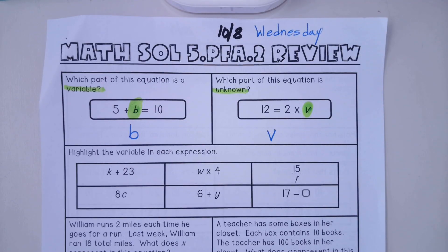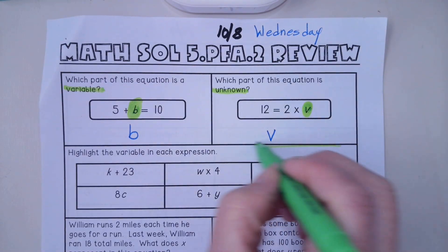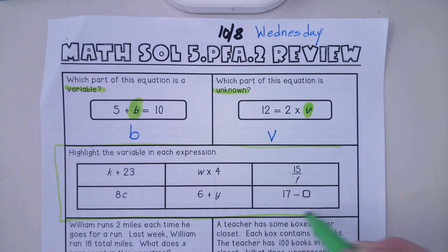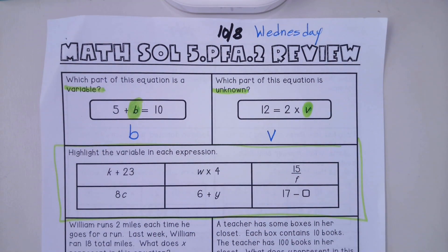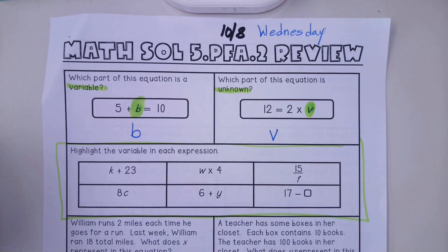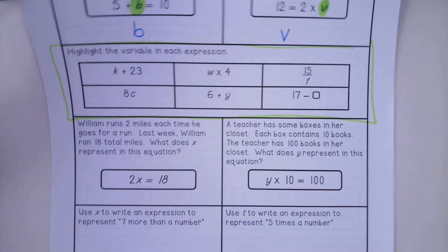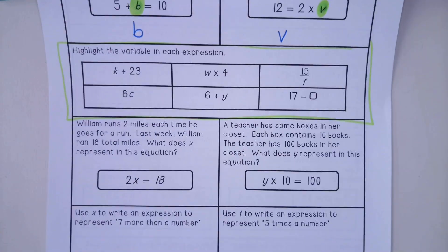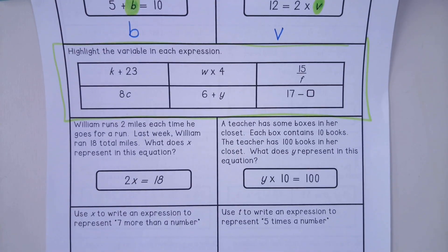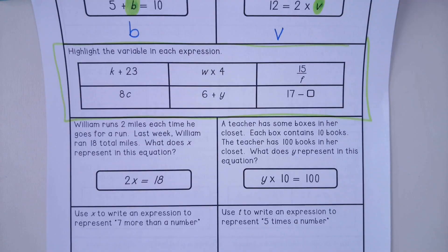In this middle box you are to highlight the variable in each expression. I will let you do that on your own. I am going to move down and do an example for the word problems. So the first word problem says William runs 2 miles each day he goes for a run.